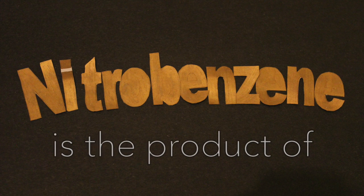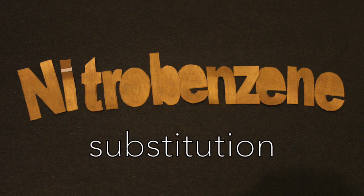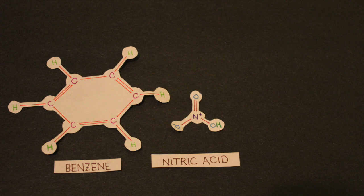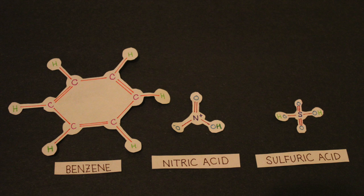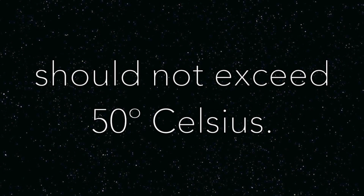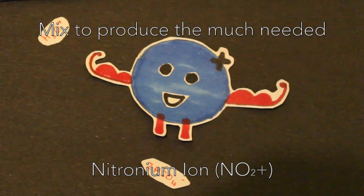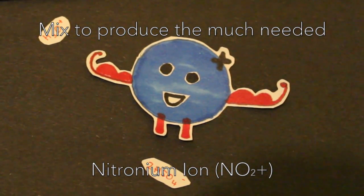Nitrobenzene is the product of substitution — benzene and nitric acid catalyzed by sulfuric acid. The temperature should not exceed 50 degrees Celsius. HNO3 produces the nitronium ion.